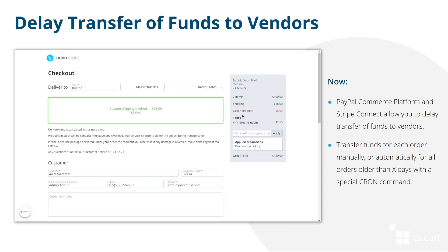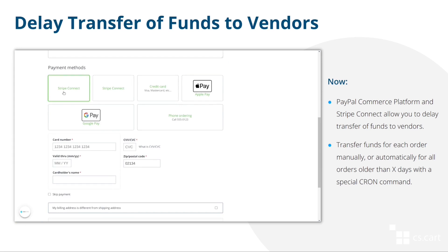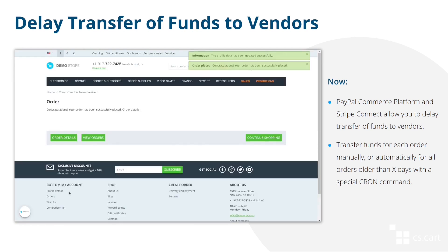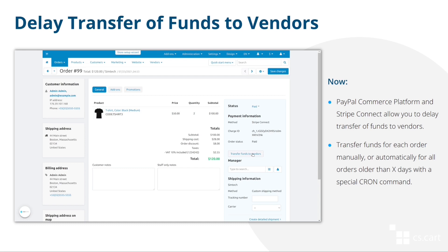When a transfer is delayed, the Transfer Funds to Vendor button will appear on each order with this payment method. You can use the button manually, but also the settings of these payment methods now have a cron command. If you add it to cron and run it regularly, money for orders will be transferred to vendors automatically if an order is old enough.